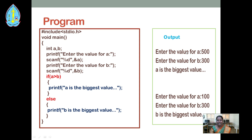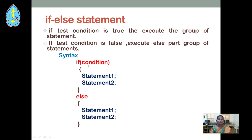For example, enter the value for a as 500 and for b as 300. Here, checking if a is greater than b — the condition is true, so 'a is the biggest value' will be printed and the if block executes. In another example, enter the value for a as 100 and for b as 300. The condition is false, so the else part will be executed and 'b is the biggest value' will be printed. So we have seen about the if-else statement: if the condition is true, the if block executes; if false, the else part executes.